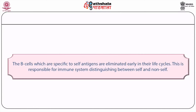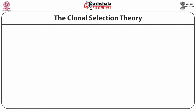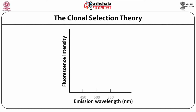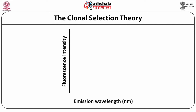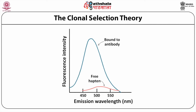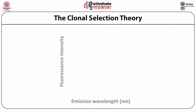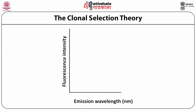If memory B cells do not encounter the antigen again, they can make IgG or IgA and respond if a second encounter takes place. Memory cells in experimental systems are responsible for the secondary response and are the basis for immunization or vaccination. B cells specific to self antigens are eliminated early in their life cycles — this is responsible for the immune system distinguishing between self and non-self. Antibodies, the immunoglobulins, share many similarities with another class of proteins called enzymes.